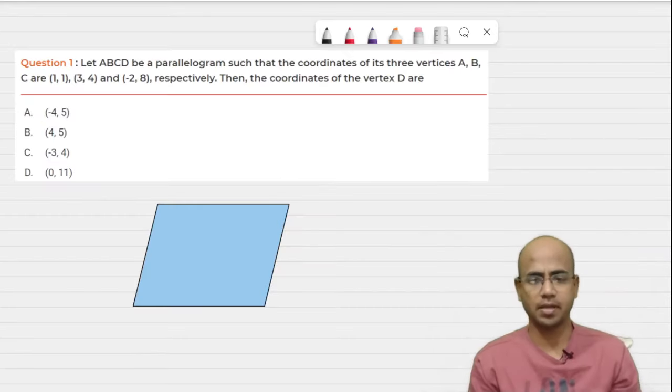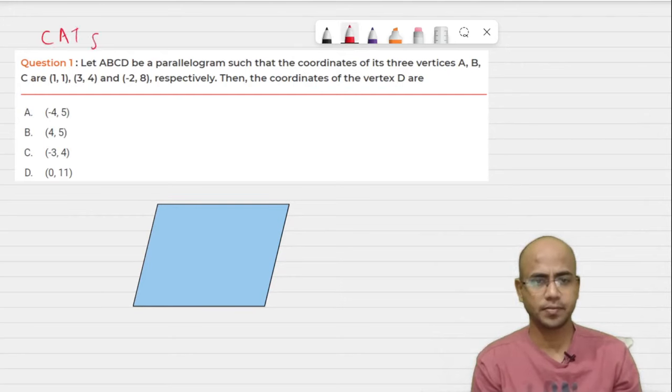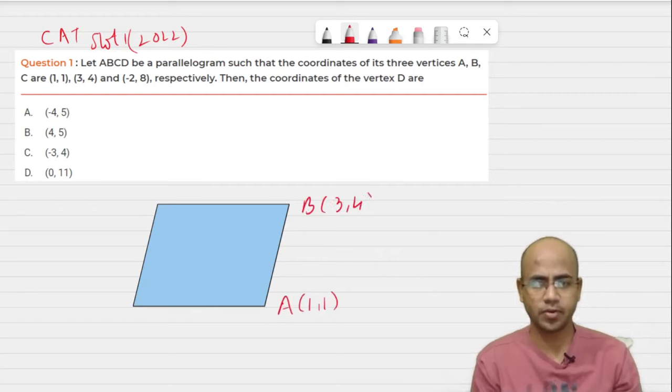Hi guys, my name is Deepankar and we are going to deal with this CAT Slot 1 question, quite recently held in 2022 exam. Wherein ABCD parallelogram is given with A as (1,1), B as (3,4), and C as (-2,8).